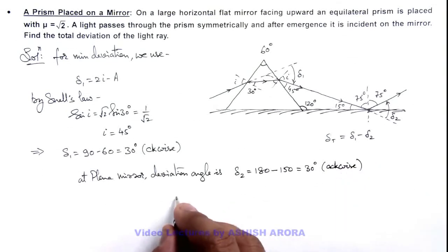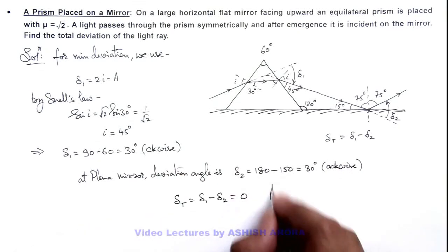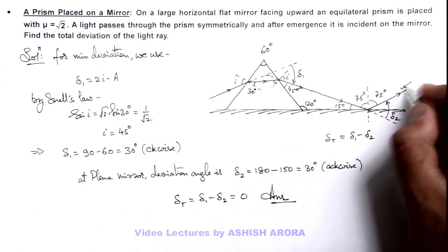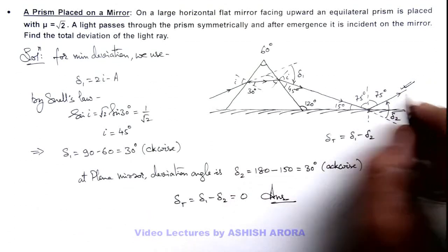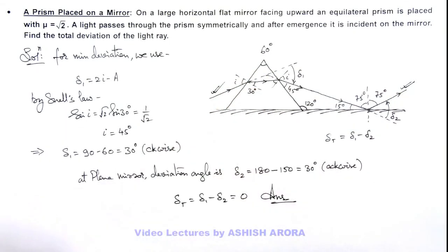So the total deviation here you can write delta total is delta 1 minus delta 2, as both are 30 degrees this is equal to 0. That will be the final answer of this problem, that means the final ray which is going after reflection from the plane mirror is parallel to the initial ray which is incident on the prism.